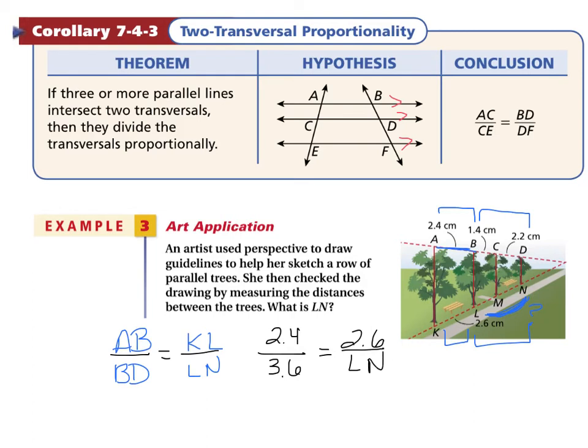I cross multiply, and 2.4 multiplied by LN equals 3.6 times 2.6, and that gives us 9.36. Divide both sides by 2.4, and the length of LN would be 3.9. Our answer would be 3.9 centimeters.